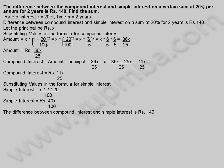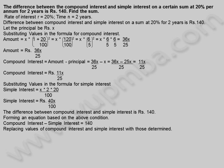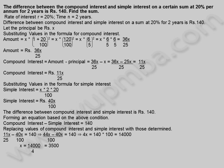The difference between compound interest and simple interest is 140 rupees. Forming an equation: compound interest minus simple interest equals 140. Replacing values: 11X by 25 minus 40X by 100 equals 140, which gives (44X minus 40X) divided by 100 equals 140, so 4X equals 14,000, giving X equals 14,000 divided by 4, which equals 3,500. Hence the principle is 3,500 rupees.